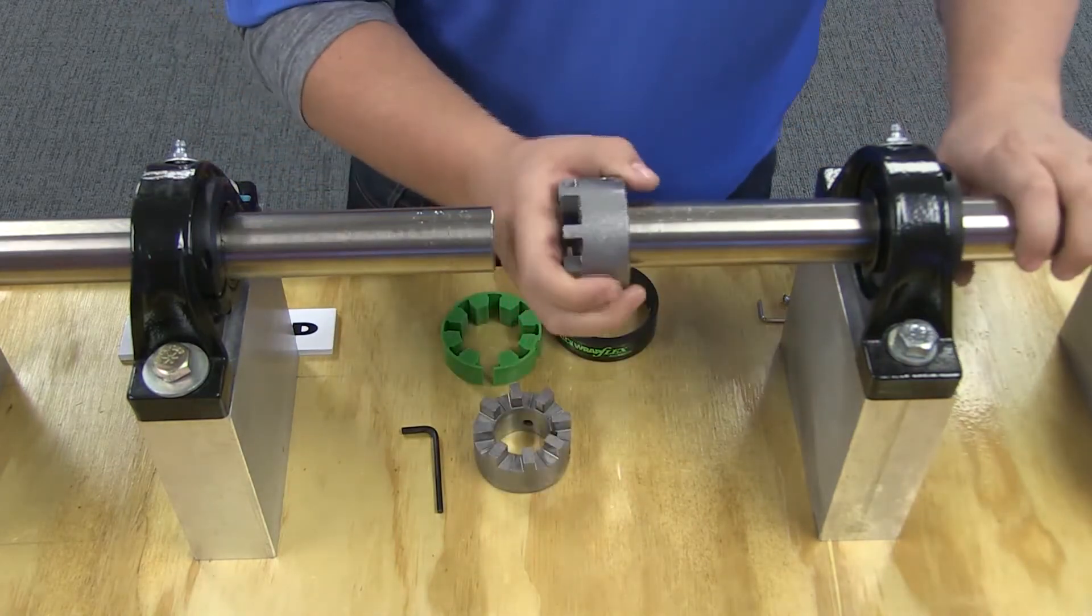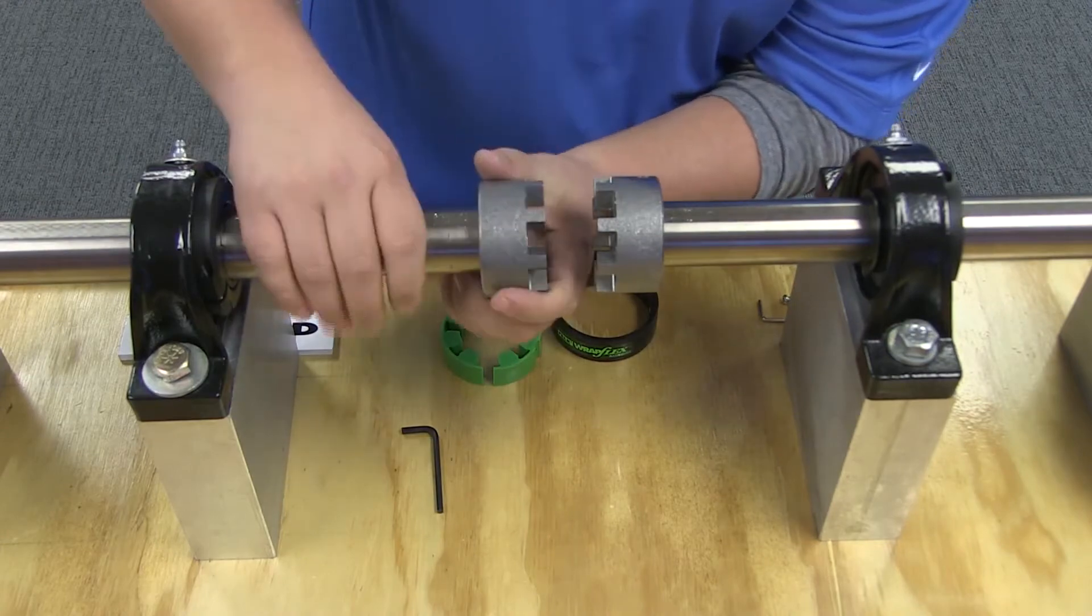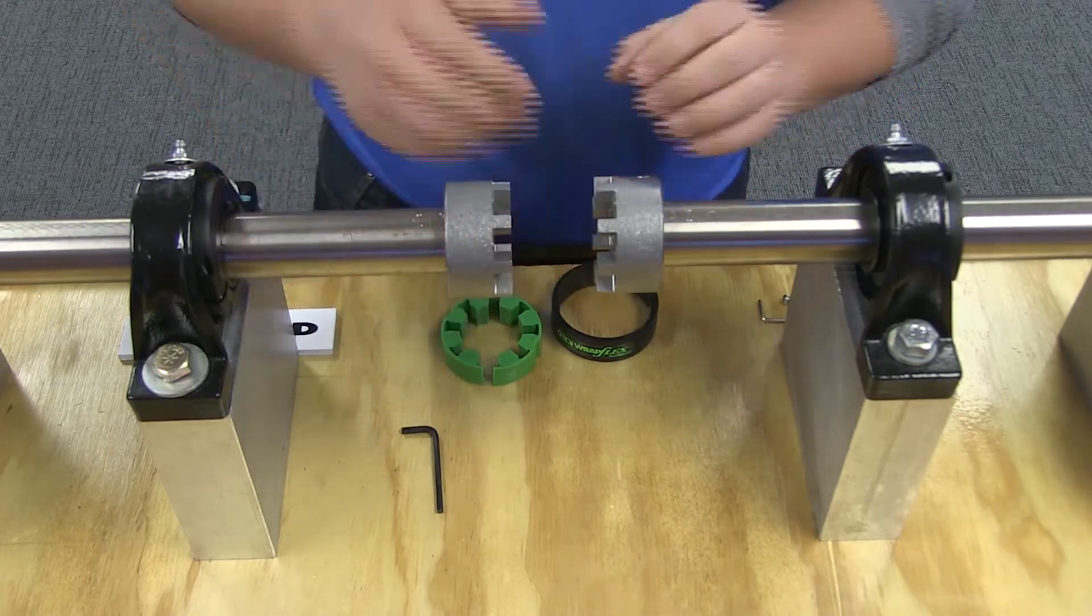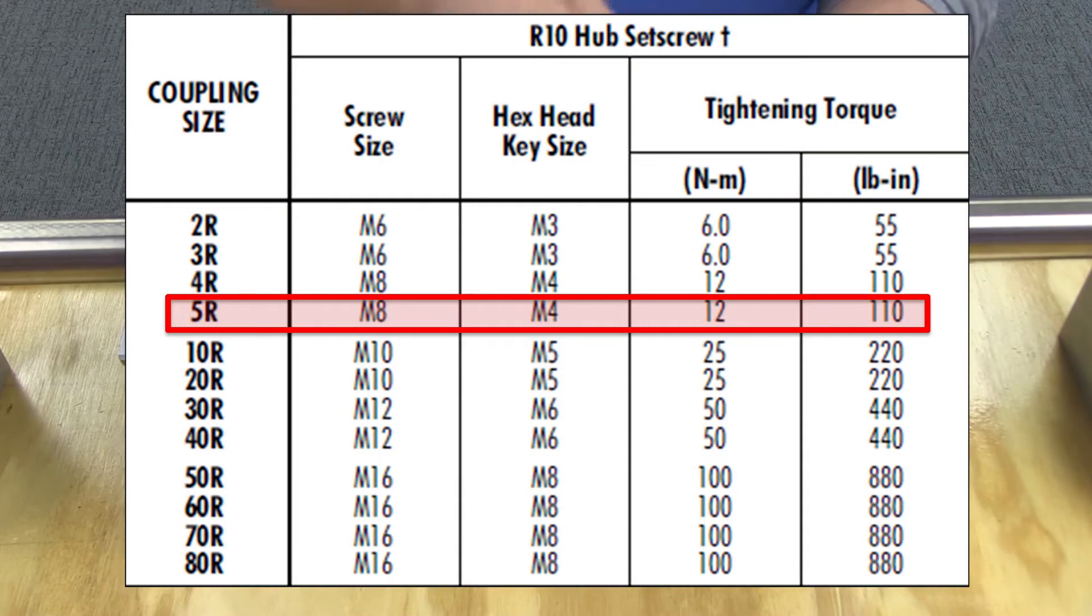The first step is to install the hubs. For clearance fit hubs, mount the hubs with the inner hub face flush with the shaft end and tighten set screws for each hub. Use the specified torque ratings shown in the table.